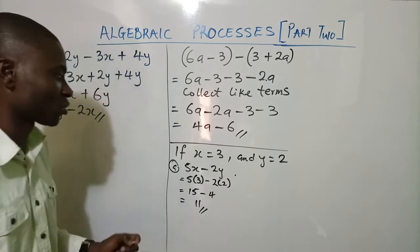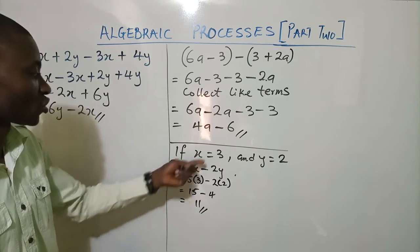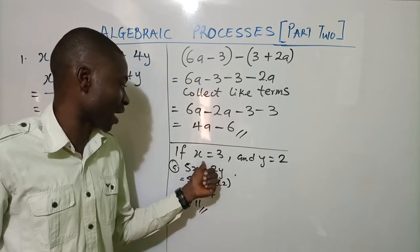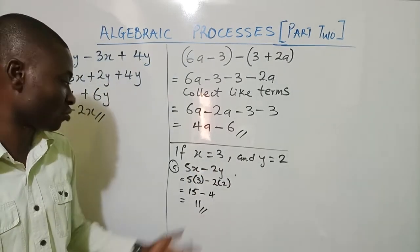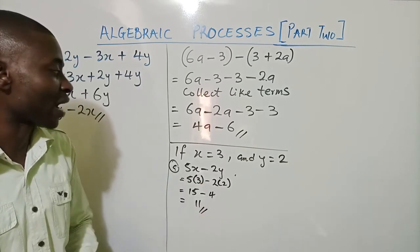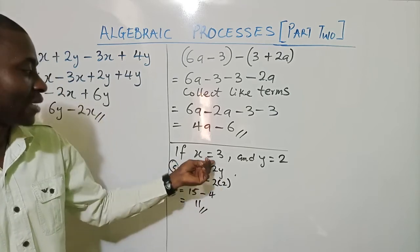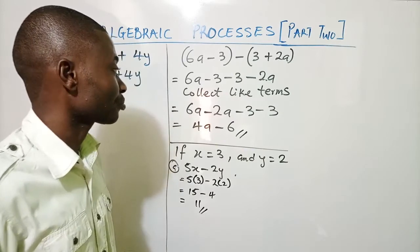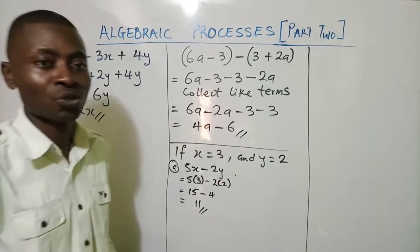So the bottom line is: anytime you have a substitution question, just replace the value of each variable into the expression given to you and then evaluate. That is how you find the value of 5x minus 2y when x equals 3 and y equals 2. There are other aspects of algebraic expressions that we also need to look at.